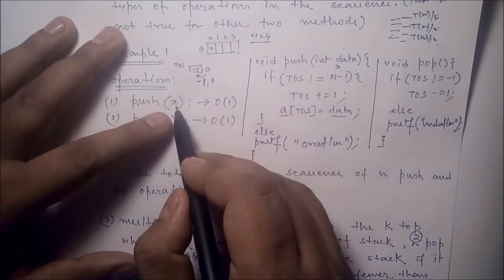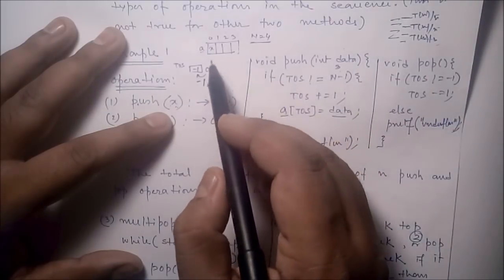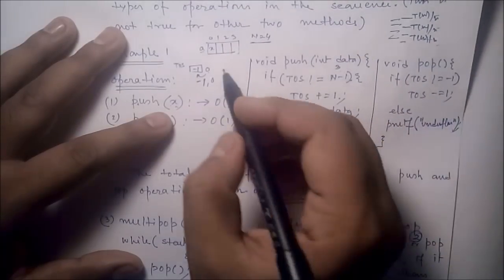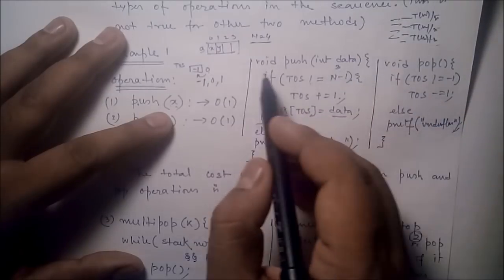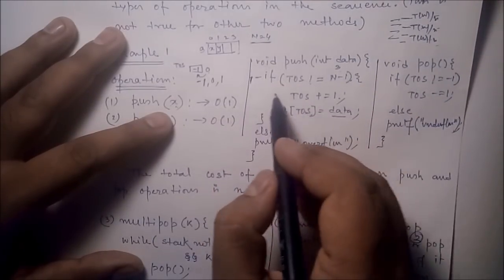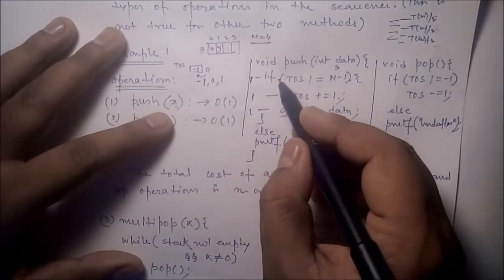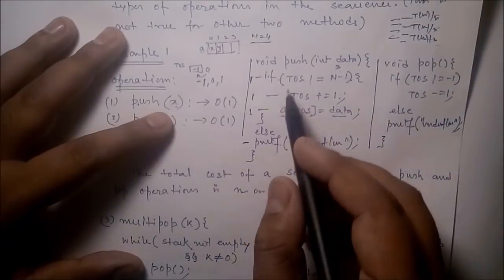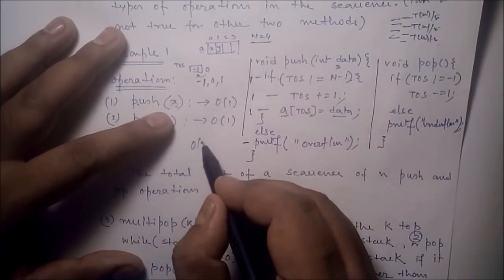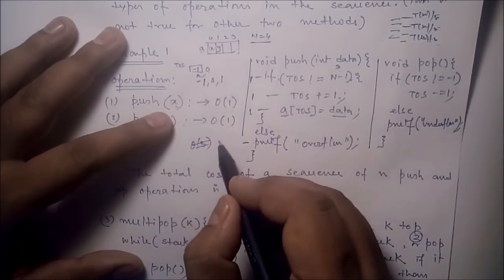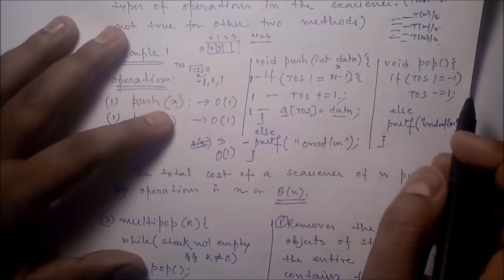Each step in the push operation has complexity 1 — the condition check, increment, and assignment are all constant. So the complexity of push is O(1), constant complexity. Similarly for the pop operation: if top of stack is not -1, we decrement top of stack. The number of steps is 2, so we write O(1) — constant complexity.